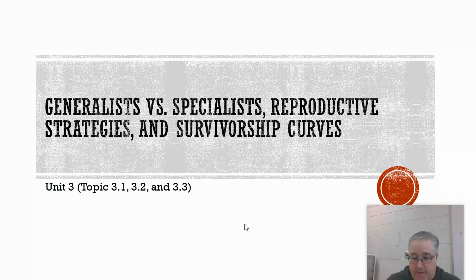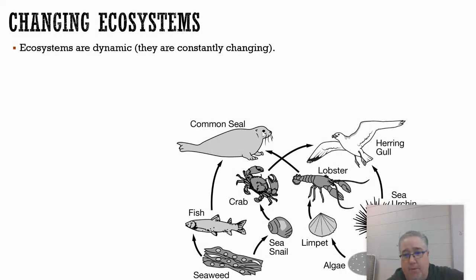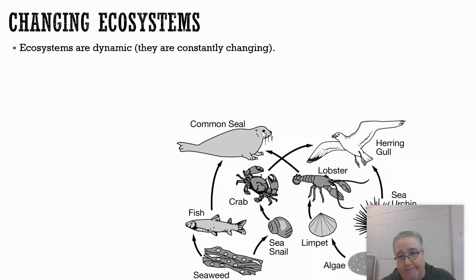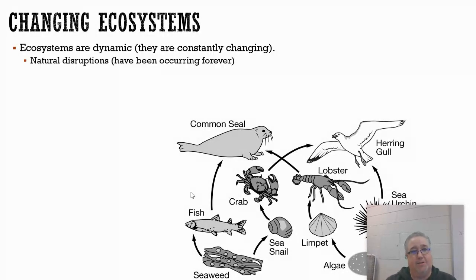Unit 3 is on populations, and there are a lot of different aspects to populations we're going to talk about. But before we get into that, I want to review a little bit from Unit 2. One of the things we talked about was that populations are dynamic — they're not staying the same all the time. For example, the tundra of northern Canada has its own characteristics, biotic and abiotic factors, but the environment has been changing for a long time. It fluctuates.